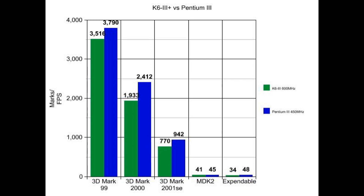They're kind of in the same ballpark — if the Pentium 3 is down on the field, the K6-3 Plus isn't on the other side of the city, but it might be up in the bleachers squinting to wave. The Pentium 3 is ahead across all the synthetic benchmarks. MDK 2 is not that bad — about 4 FPS difference — but Expendable shows a pretty obvious difference, at least 10 FPS. So not clock-for-clock with the Pentium 3.